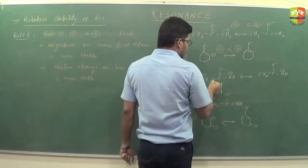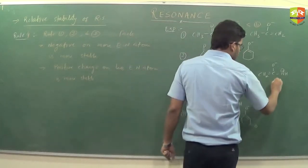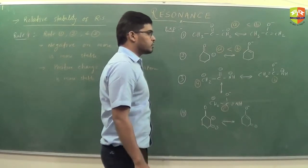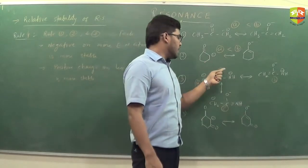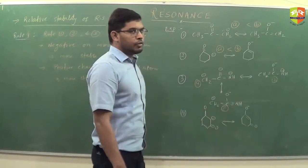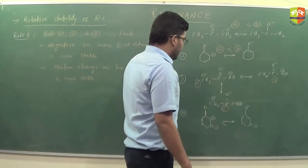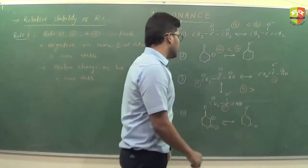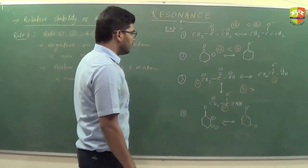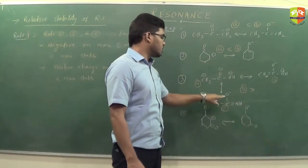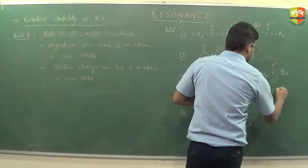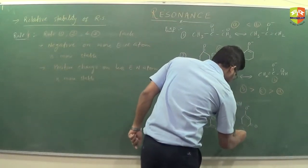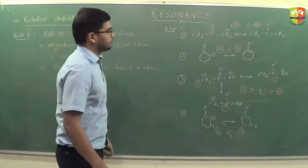Here we have negative charge on nitrogen and carbon — this is A, B, and C. The electronegativity order is: oxygen first, then nitrogen, then carbon. So negative charge on oxygen and nitrogen is most stable — B is maximum. Then we have C (oxygen and carbon), and A is least stable. So the stability order is B > C > A.